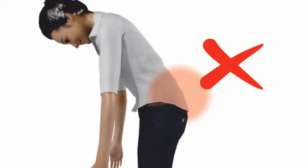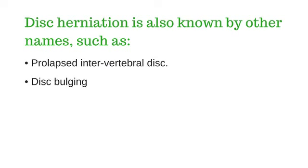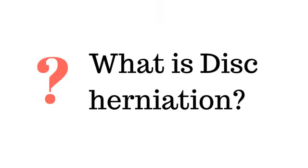Sciatica happens due to lumbar disc herniation. Disc herniation is also known by other names such as prolapsed intervertebral disc or disc bulging. To understand the logic behind bending forward, we must know what actually is disc herniation, the cause of sciatica.